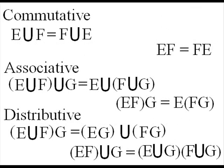So just some rules for intersections and unions. They're commutative, associative, and distributive. So just take a look at distributive. If you do E union F intersection G, you could do E intersection G, F intersection G, and then union them together. And you'll get the same answer.